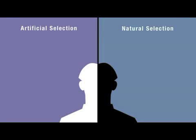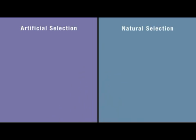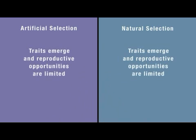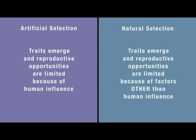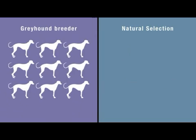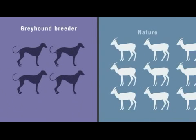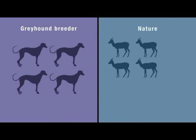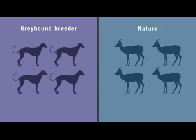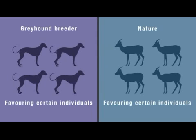And yet natural selection, one of the major mechanisms that drives evolution, requires no magical suspension or violation of physical laws. It simply says that traits also emerge, and reproductive opportunities are also limited because of factors other than human influence. If a greyhound breeder selects only the fastest dogs for breeding stock, and in the wild only the fastest gazelles outrun their predators and survive to reproduce, then both nature and the greyhound breeder are favouring certain individuals for reproducing offspring and passing on their genetic information to the next generation.